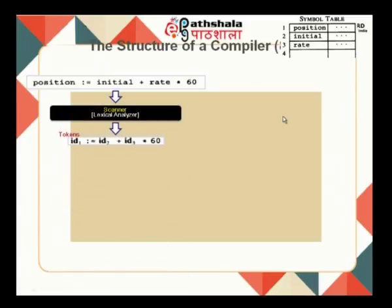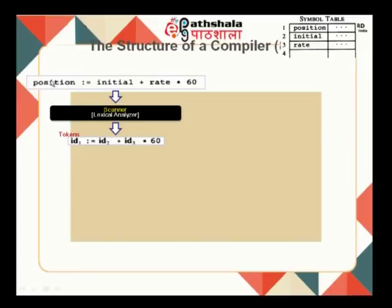When this is given to the lexical analyzer, it breaks the input into tokens. It groups 'initial' as one token, 'rate' as one token, 'plus' as another token, 'star' as another token, and '60' as another token. The same applies to 'position' and the assignment operator. Since these are variables, it assigns identifier 1 (ID 1), identifier 2 (ID 2), and identifier 3 (ID 3) to the respective variables. It simply breaks the input into lexemes — sequences of characters — and assigns a token to every lexeme.